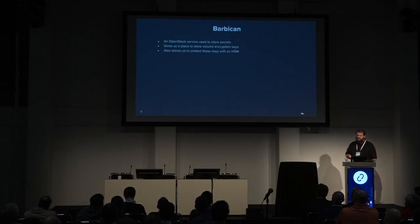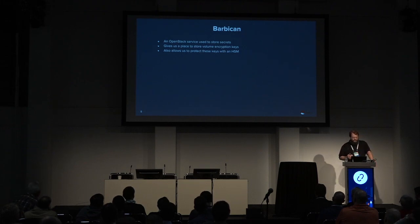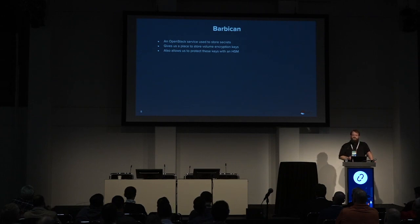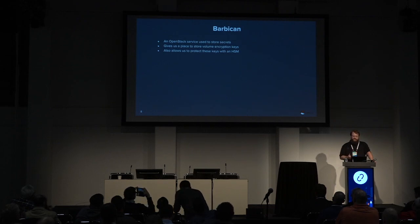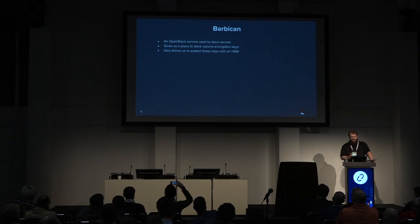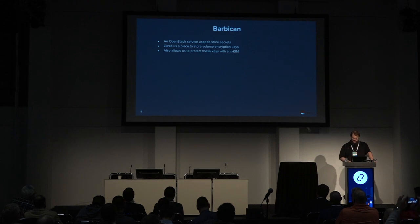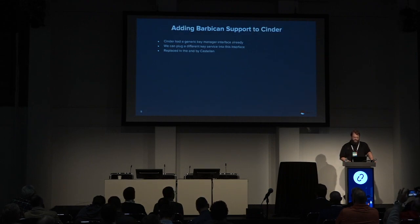Barbican integration has been completed in Cinder over the last few releases. Barbican is a service that lets you have an API in OpenStack to generate and store secrets, such as volume encryption keys. Instead of having these sitting in plain text in config files handled by the admin, Cinder, whenever it's creating volumes, will talk to Barbican and create a key. Barbican can actually safely secure these keys in a hardware security manager instead of just storing them on your OpenStack nodes, which is a pretty crucial part of most people's deployments.